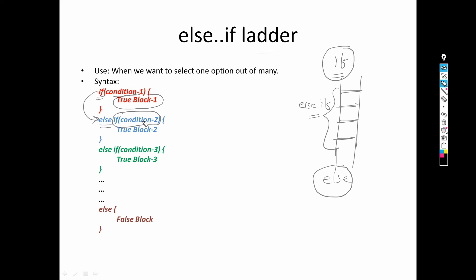If this condition is false then it will come to the else part, but in the else part we are checking a condition again. We will not simply print as in a plain if-else — instead, if the condition is wrong, we go to the else part and check whether condition 2 is satisfied. If condition 2 is satisfied, then true block 2 will be executed. If that condition is also false, it will again move to the next else-if and check the next condition. Likewise we can have many else-if statements, and at last, if all above conditions are false, only then the final else block will be executed.